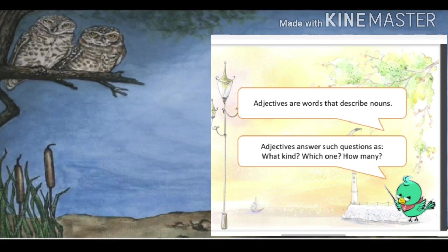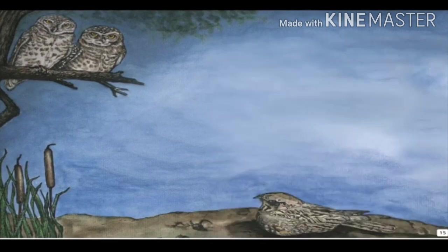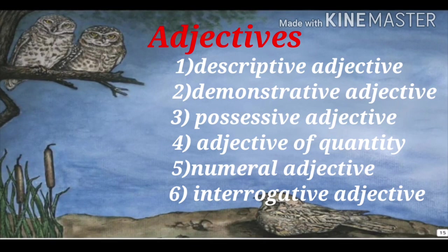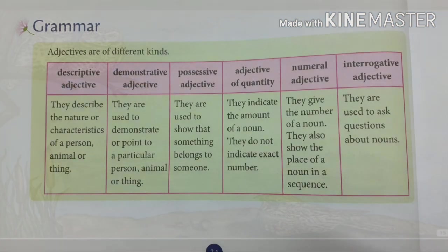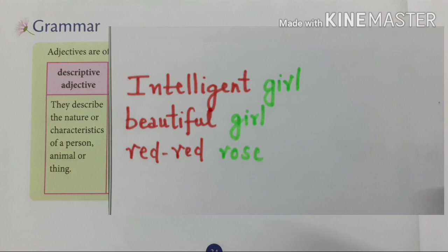Let's see what kinds of adjectives we are going to learn today. There are different kinds of adjectives. From the very word itself we can understand it is something that describes — it describes the nature or characteristics of a person, animal, or a thing. For example: intelligent girl, beautiful girl, red rose. These are all adjectives which describe the noun.